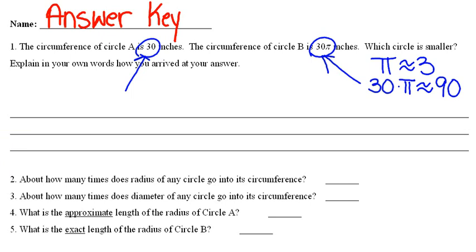That means the circumference of circle B is about 90 or so. So circle A is smaller because it has a smaller circumference. And I just explained how to get this answer.